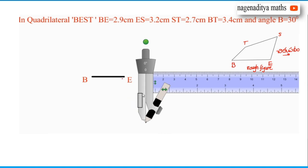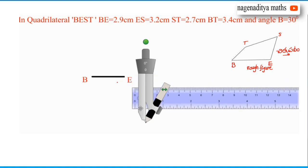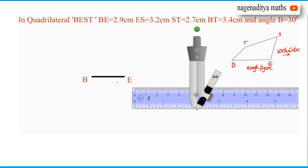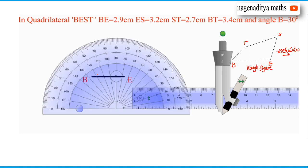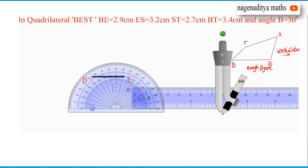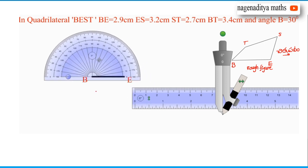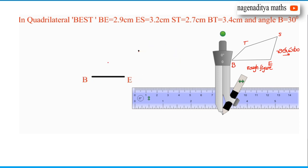For the angle we have to take a protractor. So at point B we have to place the protractor and mark the required degree. We have to construct a 30 degrees angle. The initial point is B. We mark 30 degrees and draw ray BX from B, then join B to E along that ray.